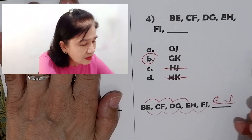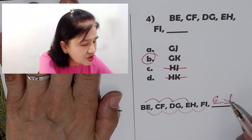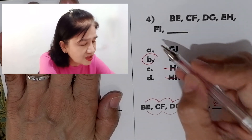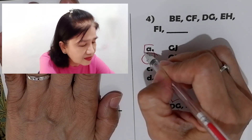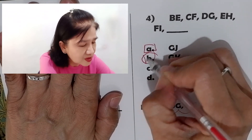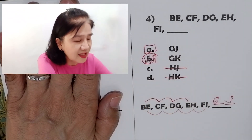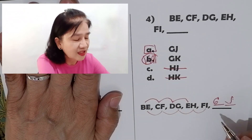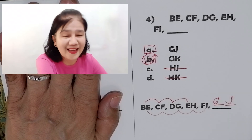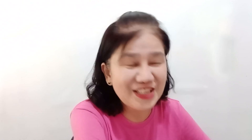Let's go back to problem number four. G J — G J is actually letter A. I'm sorry, the answer is letter A: G J. Not perfect — just human.